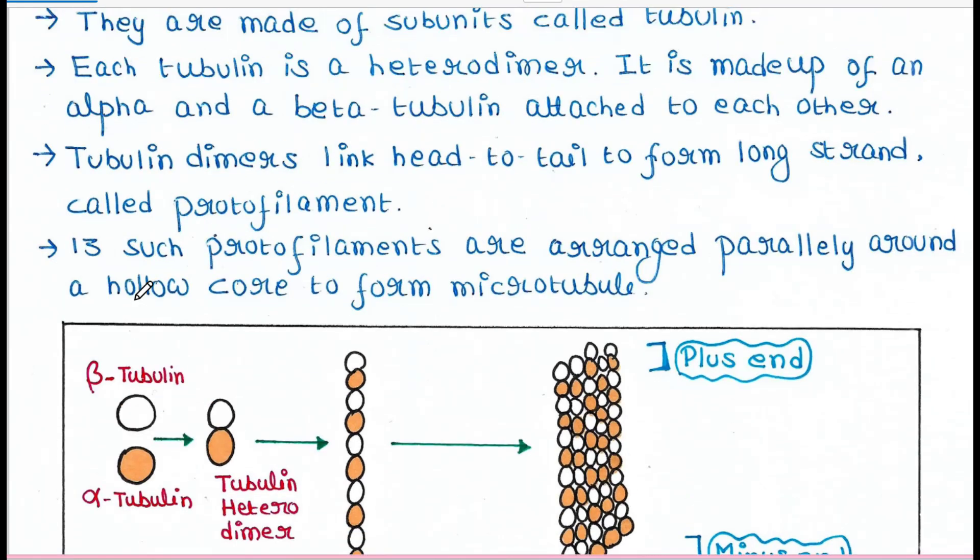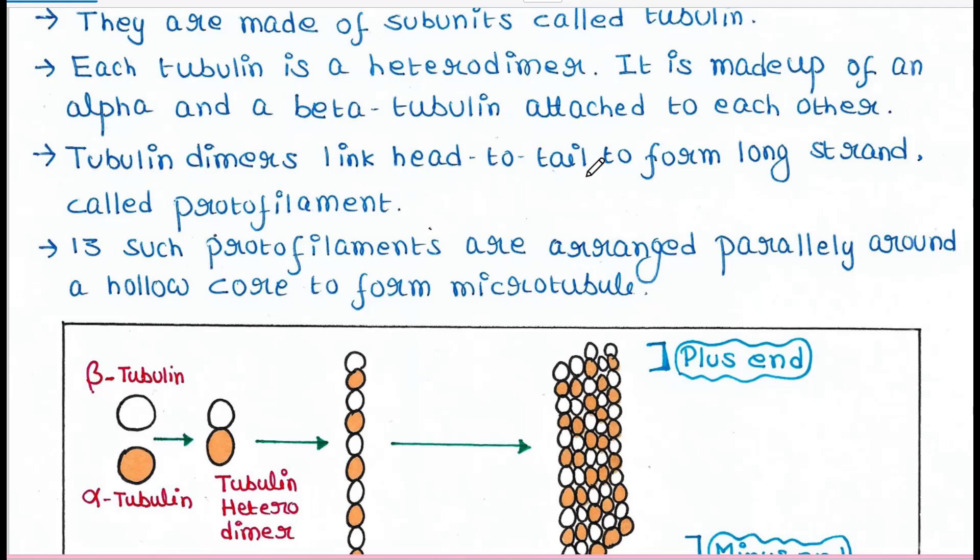Now, tubulin dimers link head to tail to form long strands called protofilaments. So this is the protofilament. These dimers link here from head to tail to form this protofilament.